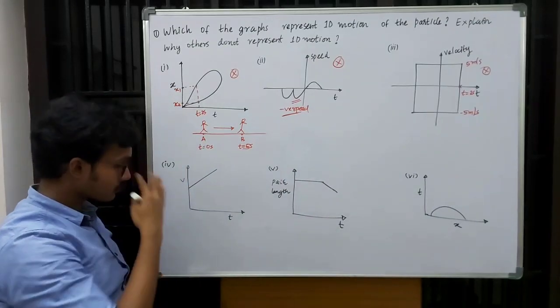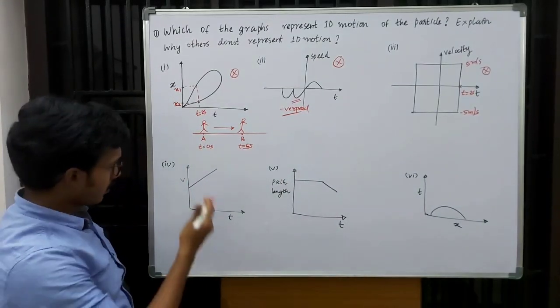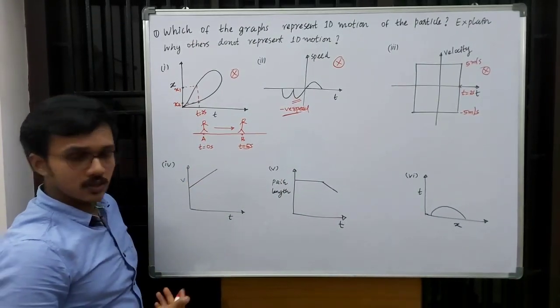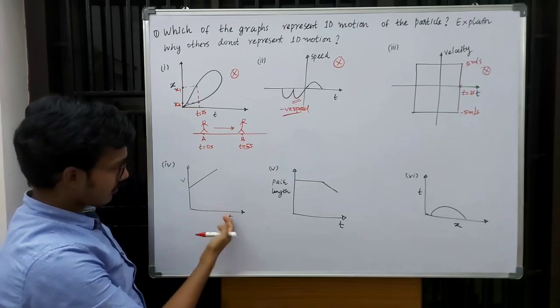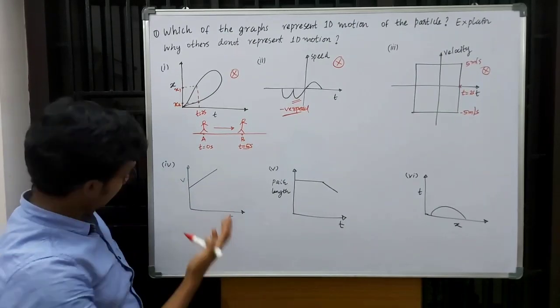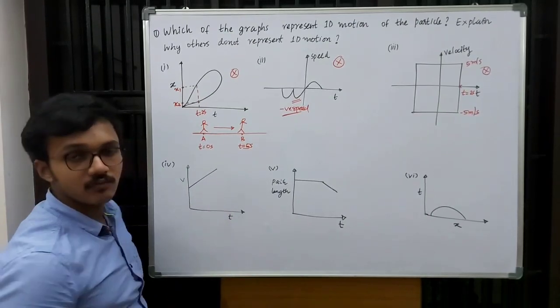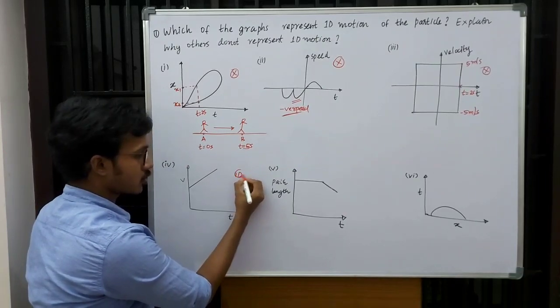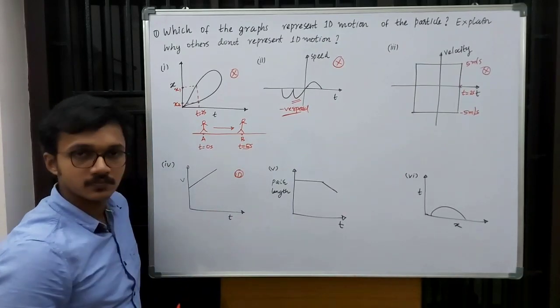Moving on to the fourth graph. Here we are given with a velocity-time graph. From its nature itself, we can understand that it represents one dimension motion.